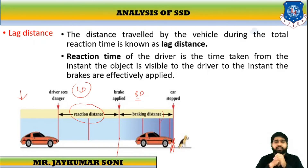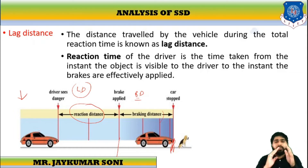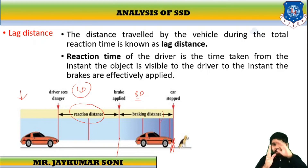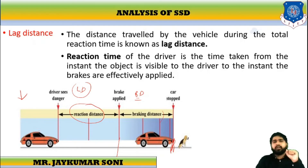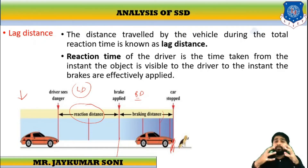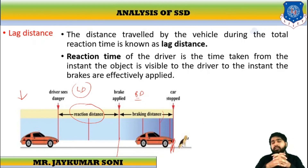Reaction time is the time taken by the driver from the instant the object is visible to the instant the driver applies the brakes. When I see the object, I observe that there is an obstruction, decide what I should do — reduce my speed, apply brakes — and then apply the brakes. I cannot take any decision immediately; certain 2 to 2.5 seconds will be consumed in understanding the situation and taking the decision. This time is called reaction time.